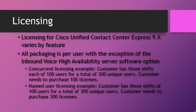For named user licensing, with the same scenario of three shifts of 100 users, the customer must purchase 300 licenses because the named user license is tied to the user ID of each agent or supervisor and cannot be reused by a different user in another shift. In summary: concurrent licensing is not tied to a user ID and depends on how many users are logged in simultaneously, whereas named user licensing is tied to the user ID and cannot be shared across unique users.